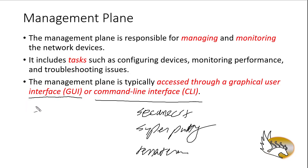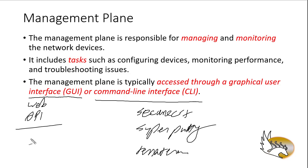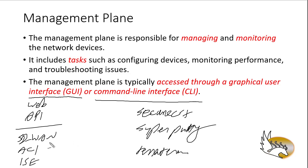These are some examples you use to connect to the command line of the device. Sometimes you use a graphical user interface such as a web page, or a REST API call that you send to the device and receive results from — whether that's an application or a web page. Good examples include the user interfaces of SD-WAN, ACI, or Cisco ISE.